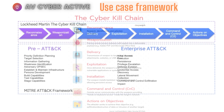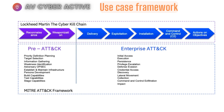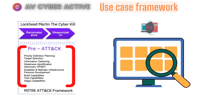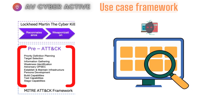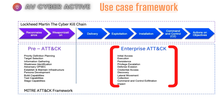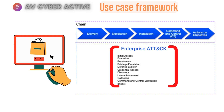Since the Lockheed Martin Cyber Kill Chain is commonly discussed, let me explain it further. Dividing it into two parts — pre-attack and enterprise attack — in the pre-attack stages, everything is still confined to your perimeter or boundary firewall. The attacker is doing reconnaissance to gather information and weaponization to develop scripts that exploit loopholes found during recon. In the enterprise attack stage, the attacker delivers the payload, exploits the system, installs malware, maintains persistence by establishing command and control connectivity, and achieves the objective — whether cyber espionage or financial damage.